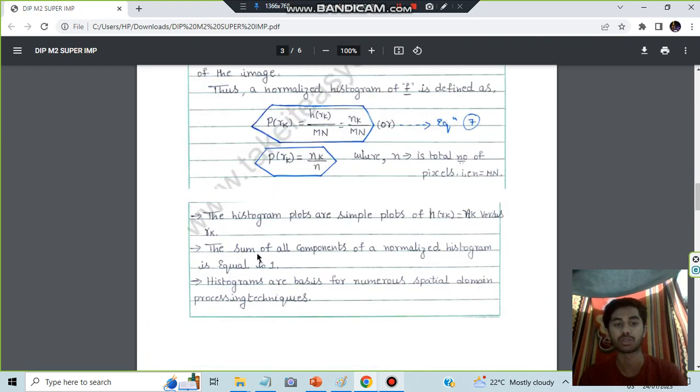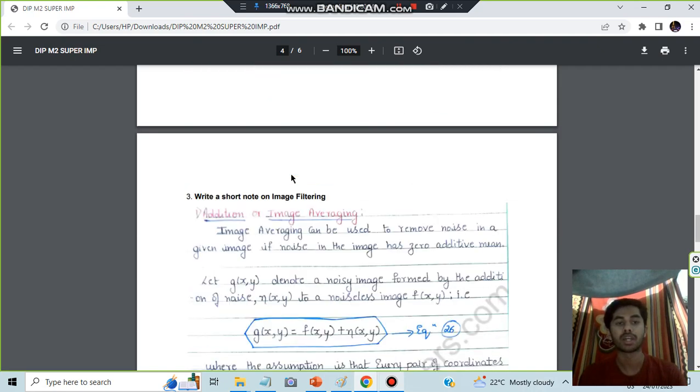Final conclusion also you have to write. After these, sub-concepts are there. If you know about that, you have to write that, or else you'll get half marks in that again. Moving on, we have the third one, which is image filtering.